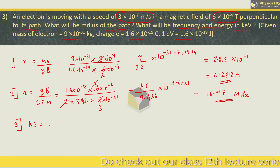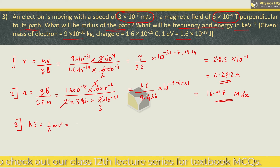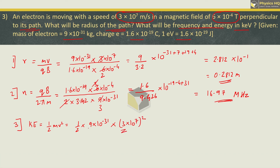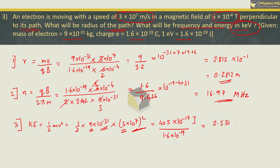Lastly, we find the energy — kinetic energy = ½mv². So ½ × 9 × 10⁻³¹ × (3 × 10⁷)² gives 10⁻¹⁷ joule. But we need energy in kilo electron volt, so divide by 1.6 × 10⁻¹⁹. This gives 2.531 × 10³ electron volt, which is 2.531 kilo electron volt. Hope you all understood this.